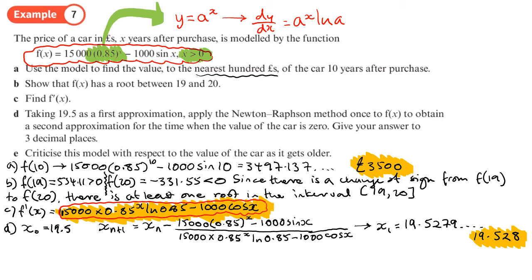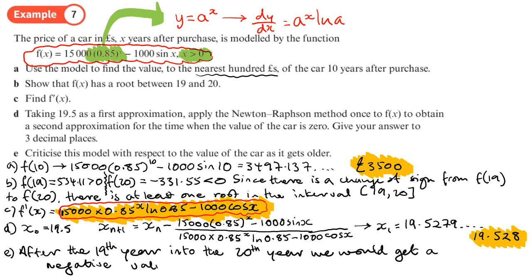Part e, criticize this model with respect to the value of the car as it gets older. Well, after the 19th year into the 20th year, we would get a negative value for the car. So after 19 years, when you get to 20 years, basically you're going to get a negative value for the car, and that's ridiculous. So after 19 years, really the model breaks down and is nonsensical.